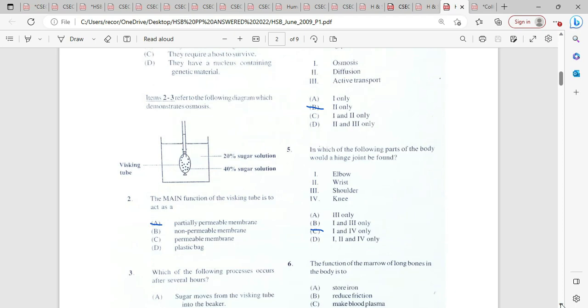Item 2 to 3 refers to the following diagram which demonstrates osmosis. If we look there, there's a visking tube which takes on the place of a selectively permeable membrane. And if we observe here, there's a greater concentration of solute within the visking tube than there is within the beaker. The main function of a visking tube is to act as a partially permeable membrane, pretty much like the cell membrane would have.